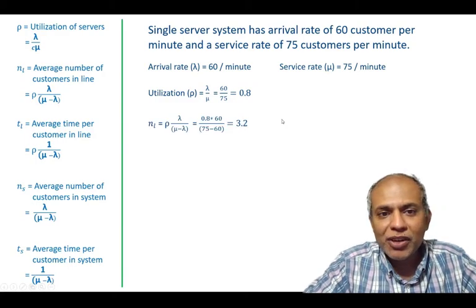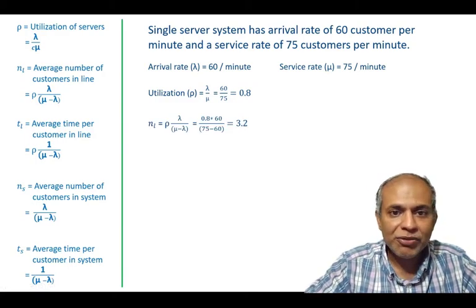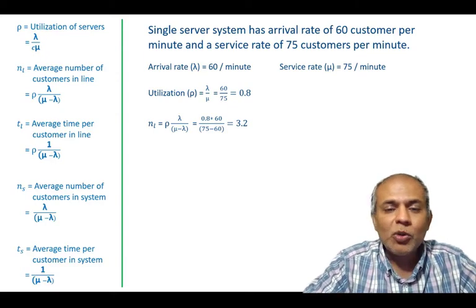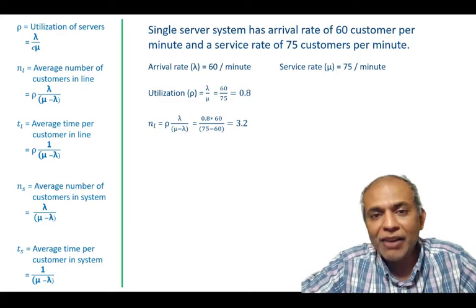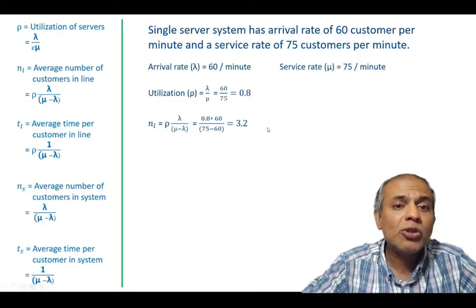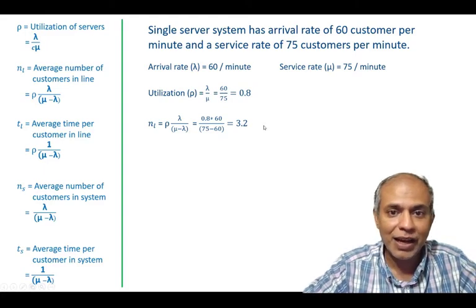The number of customers in the line, we apply the formula and we get an answer of 3.2 which tells us that on average at any given point of time in the system there would be 3.2 customers waiting in the line.